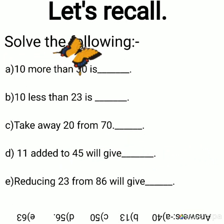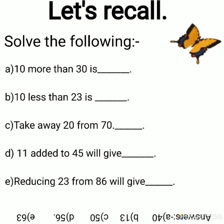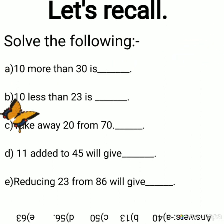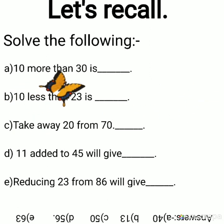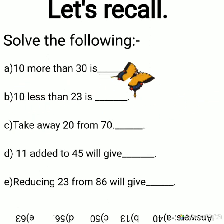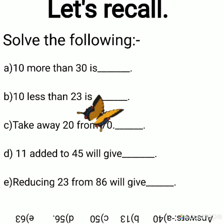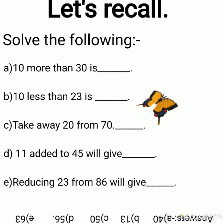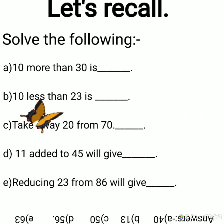B: 10 less than 23 is dash. Less than means minus, subtract, backward counting. If you are at 23 and go 10 steps backward, which number will you reach? Recall the number chart in your mind. Yes, it is 13.